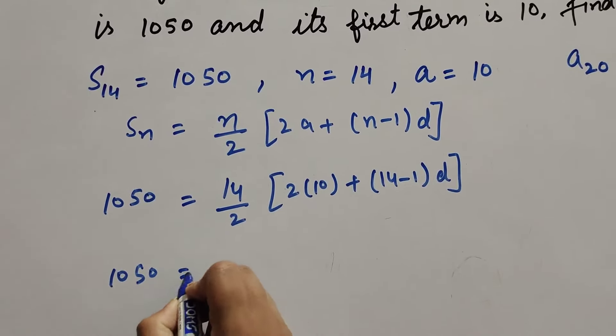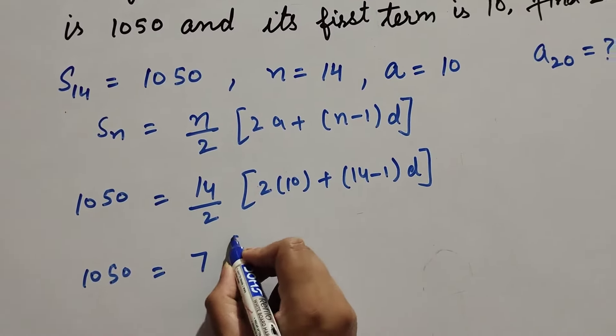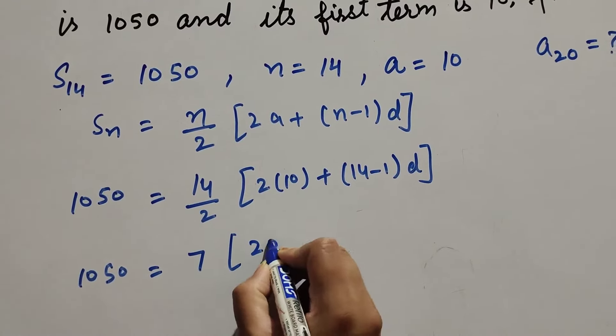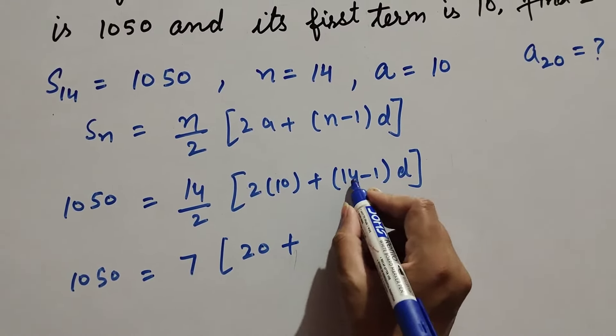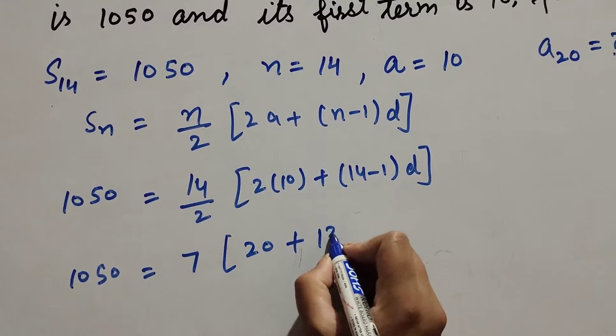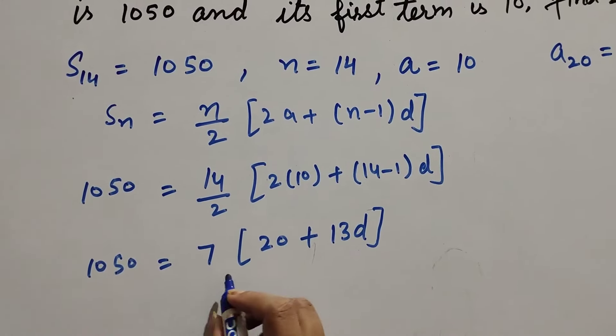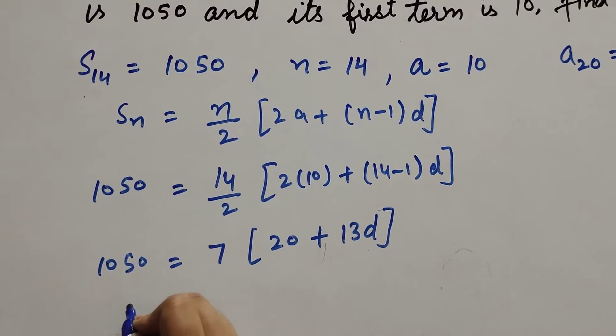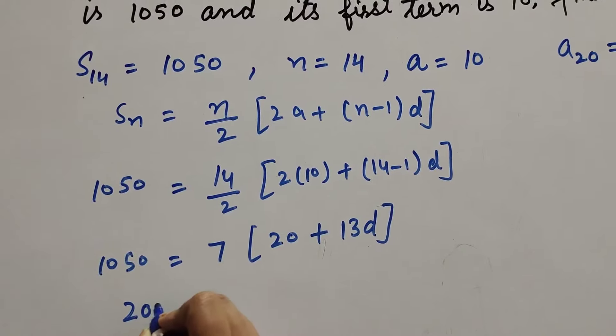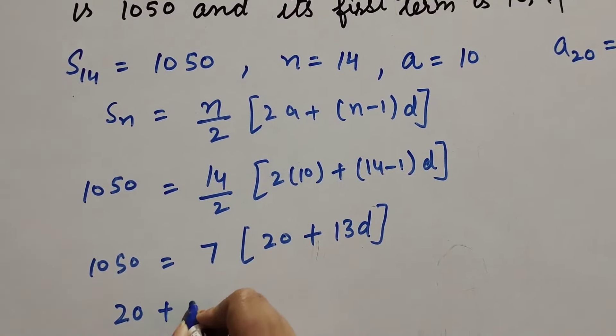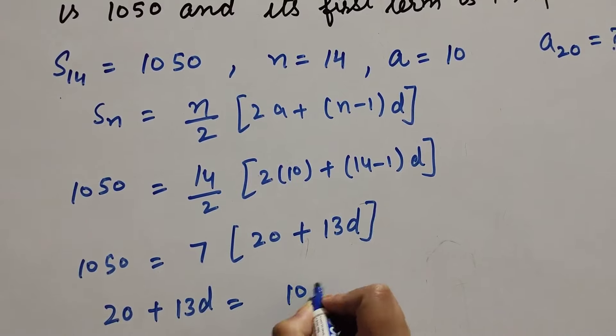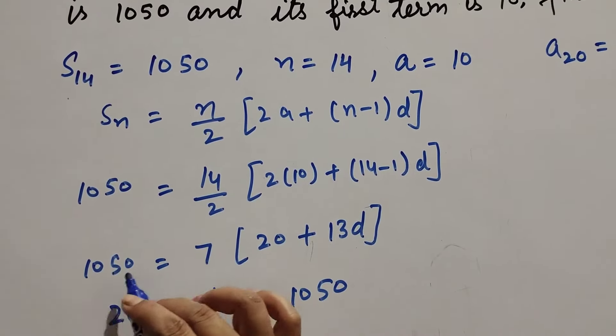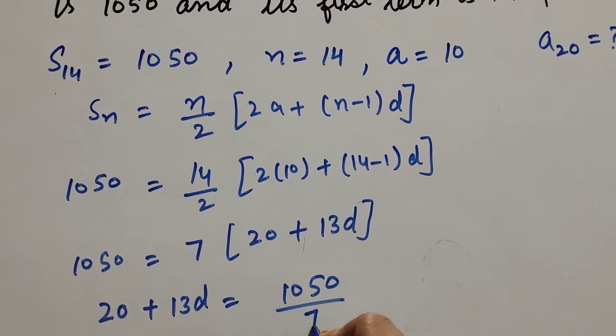1050 equals 14 divided by 2, we get 7, times [2 multiply by 10 is 20, plus 14 minus 1 is 13d]. So transposing 7 to right hand side, we write it as 20 plus 13d equals 1050 over 7.